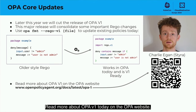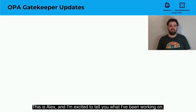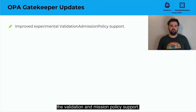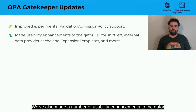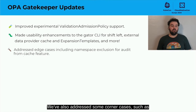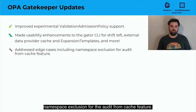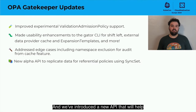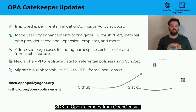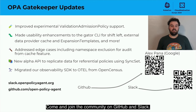Read more about OPA v1 today on the OPA website. This is Alex, and I'm excited to tell you what I've been working on. We continue to make improvements to the validation and admission policy support. We've also made a number of usability enhancements to the Gator CLI, external data provider cache, and expansion templates features. We've also addressed some corner cases, such as namespace exclusion for the audit from cache feature, and we've introduced a new API that will help with replicating data for referential policies. Finally, we've migrated our observability SDK to OpenTelemetry from OpenCensus. Come enjoy the community on GitHub and Slack.